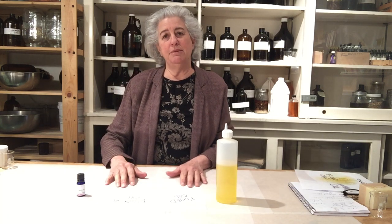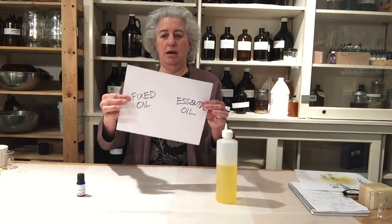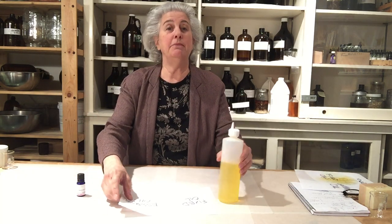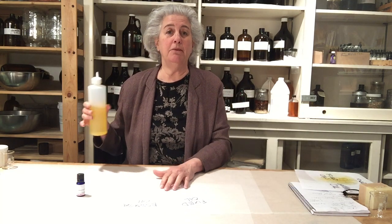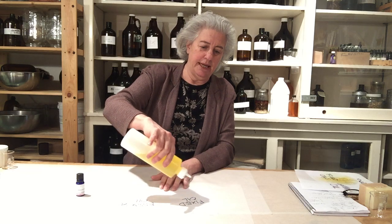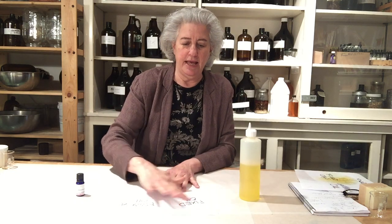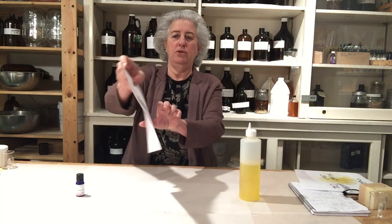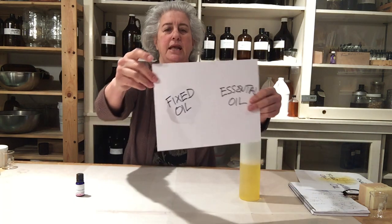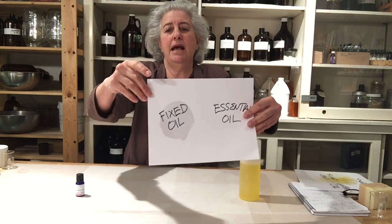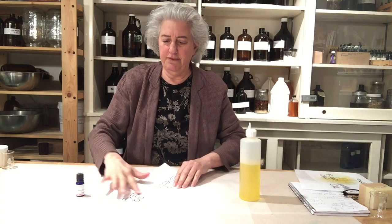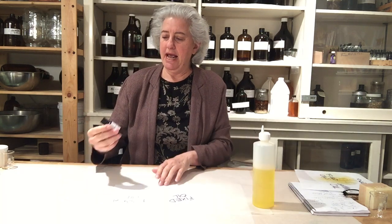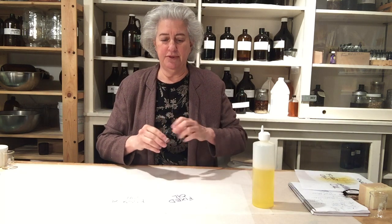We're going to demonstrate on a simple piece of typing paper, nothing exotic, with words written in Sharpie marker — something anybody can do. Here I have some almond oil. I'm putting it over the words that say 'fixed oil' and then rubbing it in. You can see how it stains the paper. If you work with these oils, you probably have clothes that are all stained with oil stains.